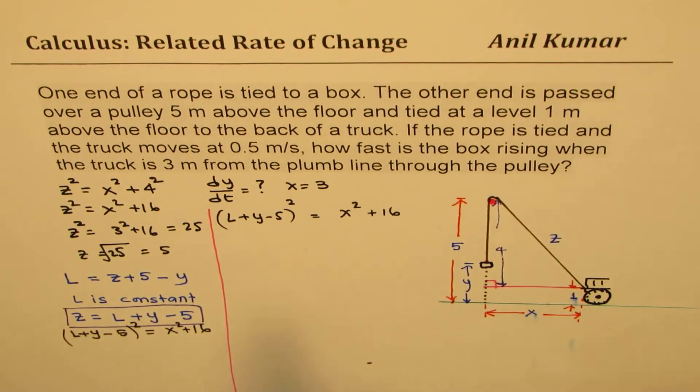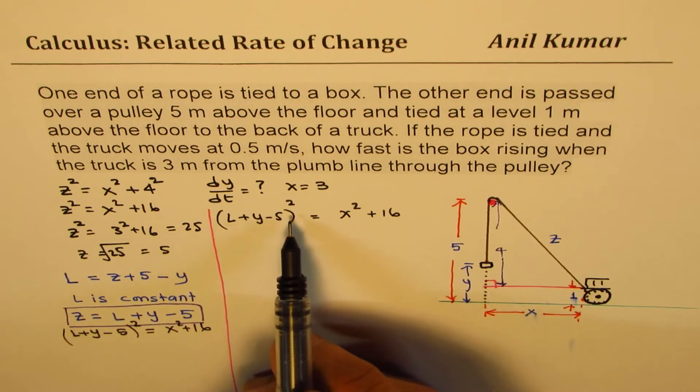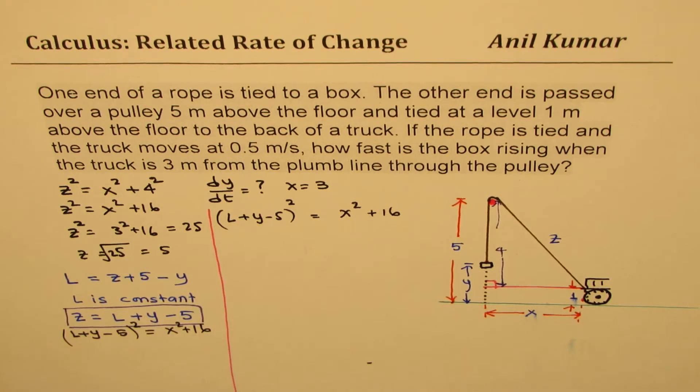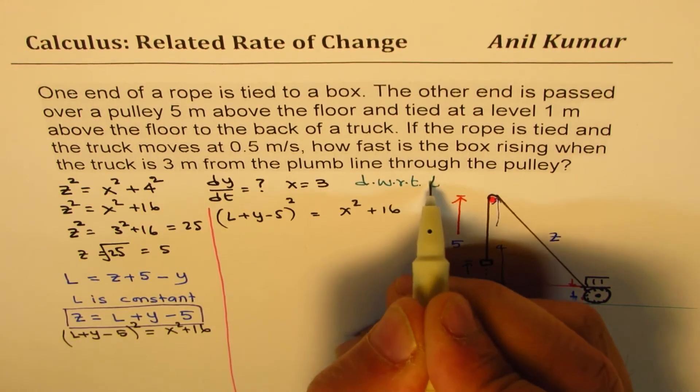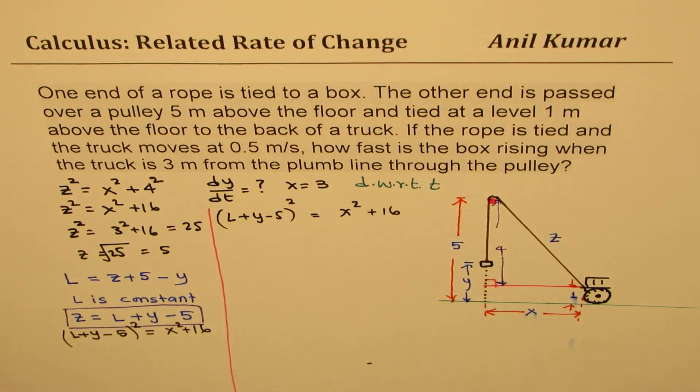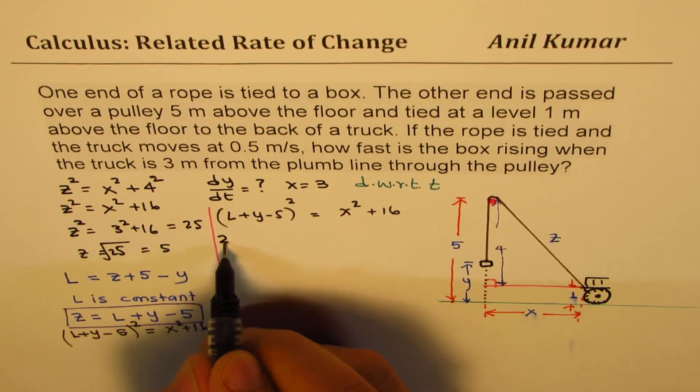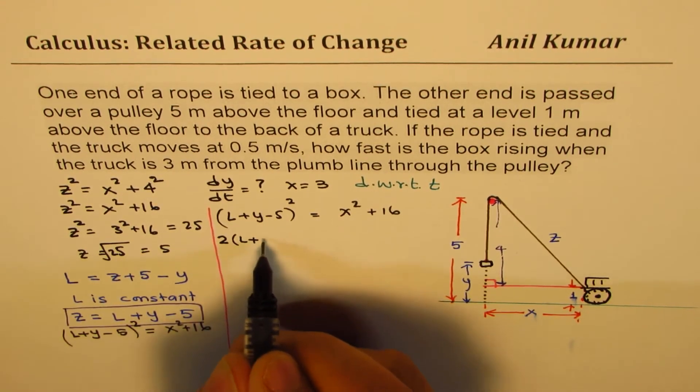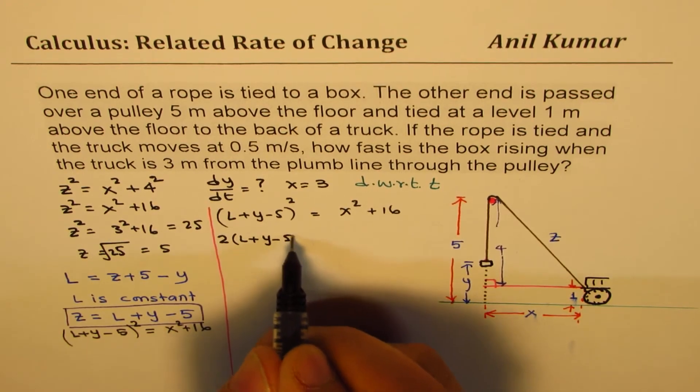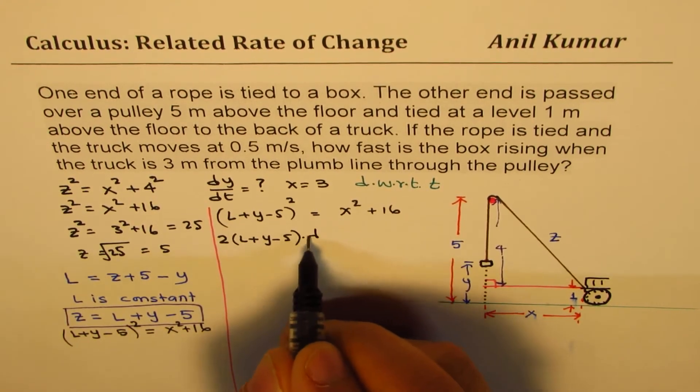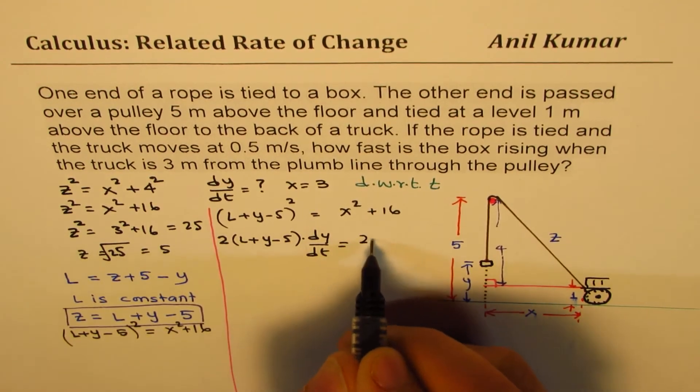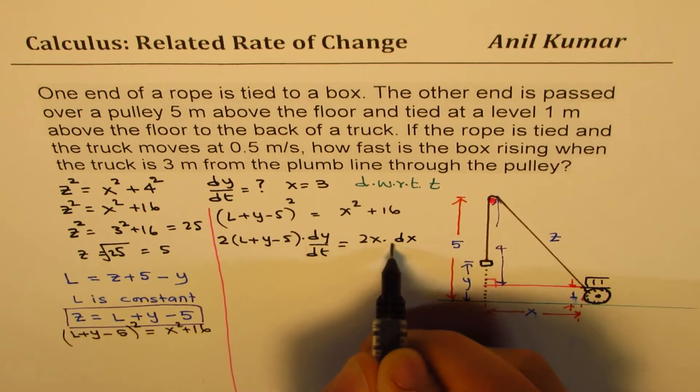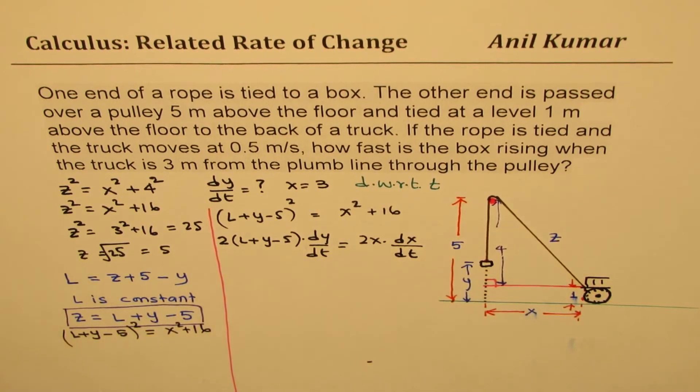To find the rate of change with respect to time, let's find the derivative with respect to time. So we'll differentiate with respect to time on both these sides. So we get 2 times (L plus Y minus 5), L is constant, so we get dy/dt equals 2X dx/dt, 16 is constant.